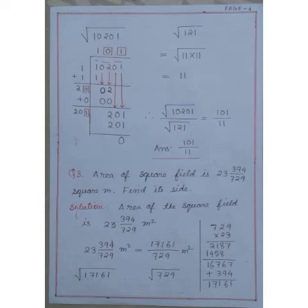Question number 3. Area of a square field is 23 and 394 by 729 square meter. Find its side. We know that the side of a square field is equal to root over area. If we find the square root of area, we get the measurement of one side of the square field.